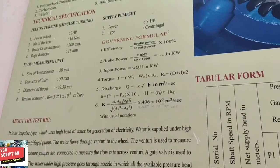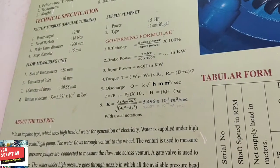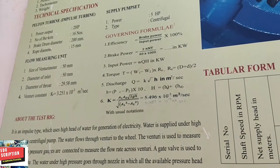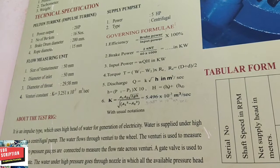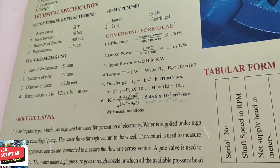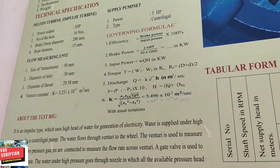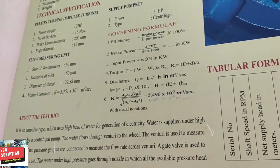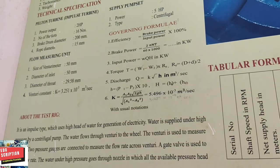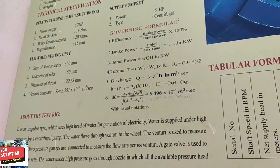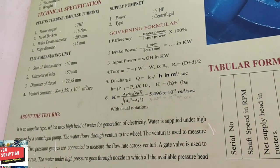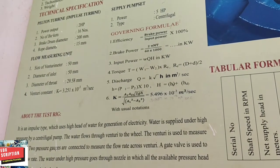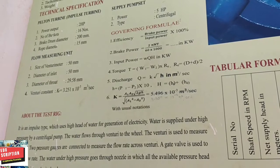In pump also we find out the discharge, that is A×h/t. But here in case of turbine, Q is equal to K×√h. Here K is the venturi constant when water flows through the venturi meter. We take that venturi constant K = (A₁×A₂×√(2gh))/(√(A₁²-A₂²)), and that value is 3.251×10⁻³.